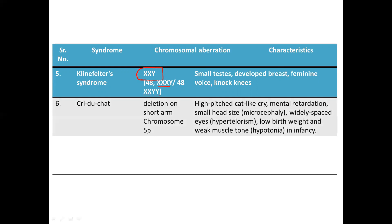Next we have Cri-du-chat syndrome, which is a deletion of the short arm of chromosome 5 (5p). The characteristic feature asked in many exams is the high-pitched cat-cry-like sound the infant makes — when the infant cries, it sounds like a cat. The consequences include mental retardation, microcephaly (small head size), hypertelorism (widely spaced eyes), very low birth weight, and decreased muscle tone.